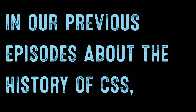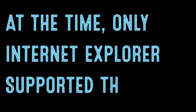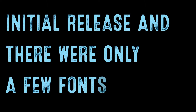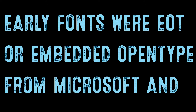In our previous episodes about the history of CSS, we went over how the support of embedded fonts came with CSS2. At the time, only Internet Explorer supported this initial release, and there were only a few fonts with copyrights that allowed distribution on the web. These early fonts were EOT, or Embedded OpenType, from Microsoft and Monotype.